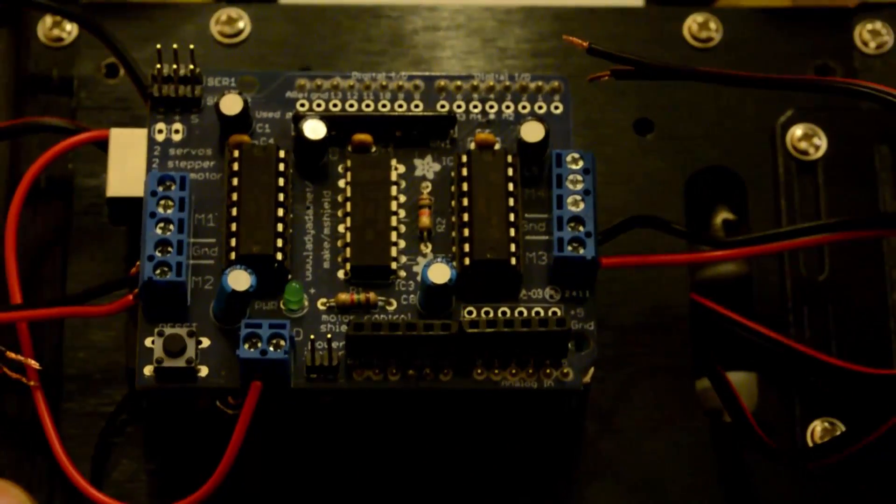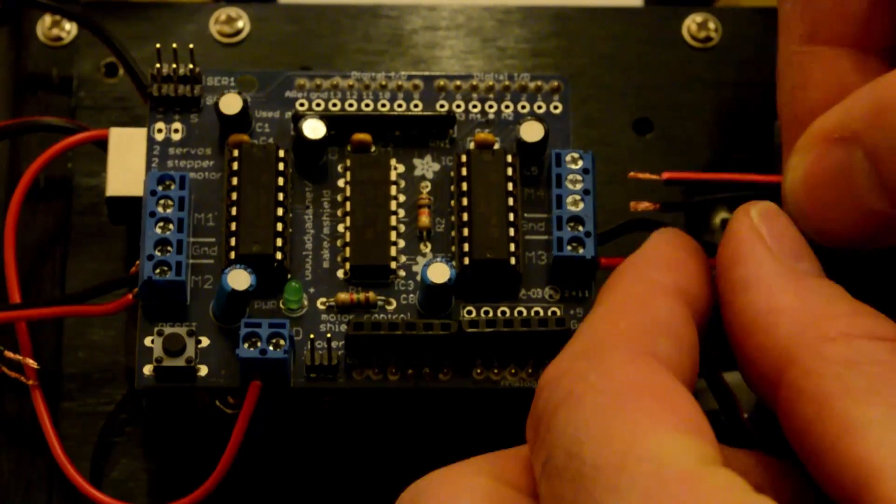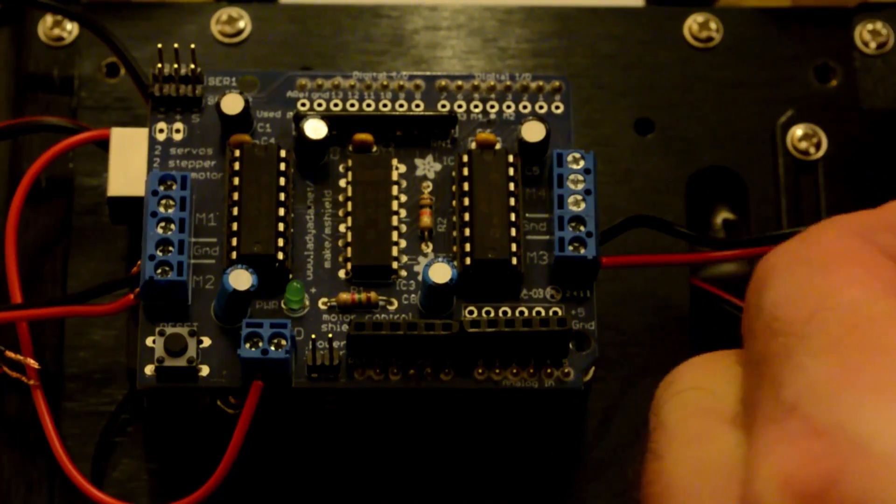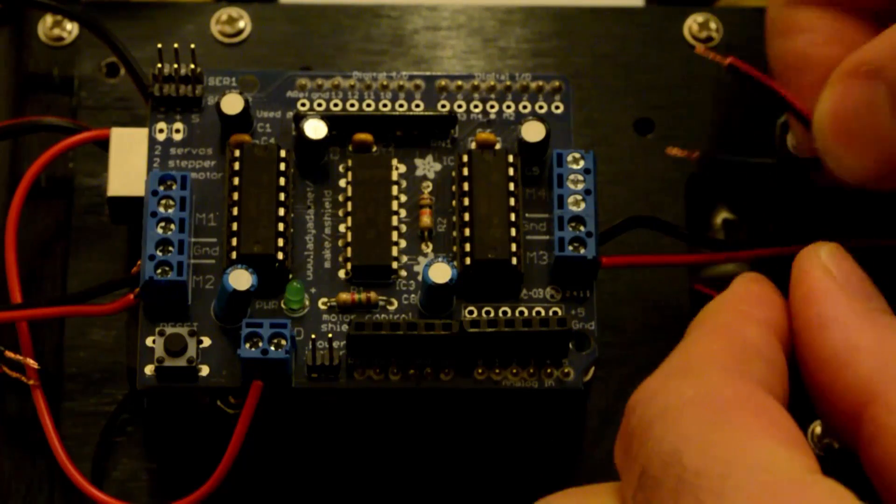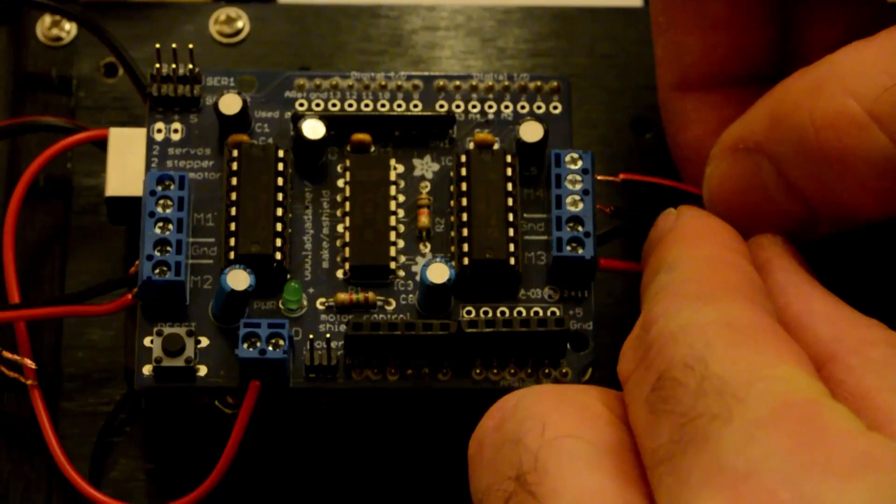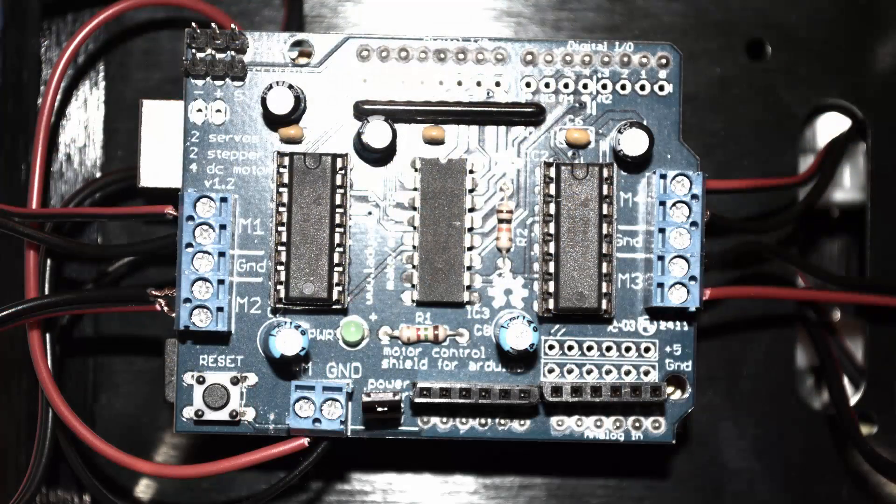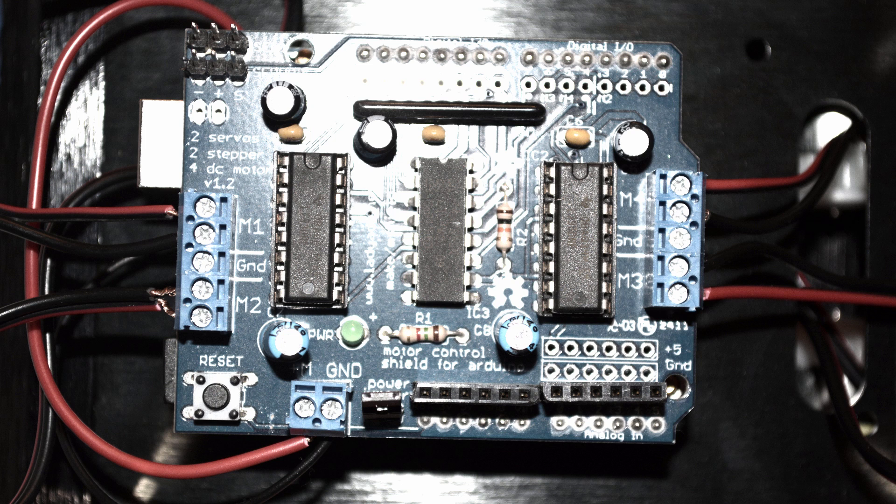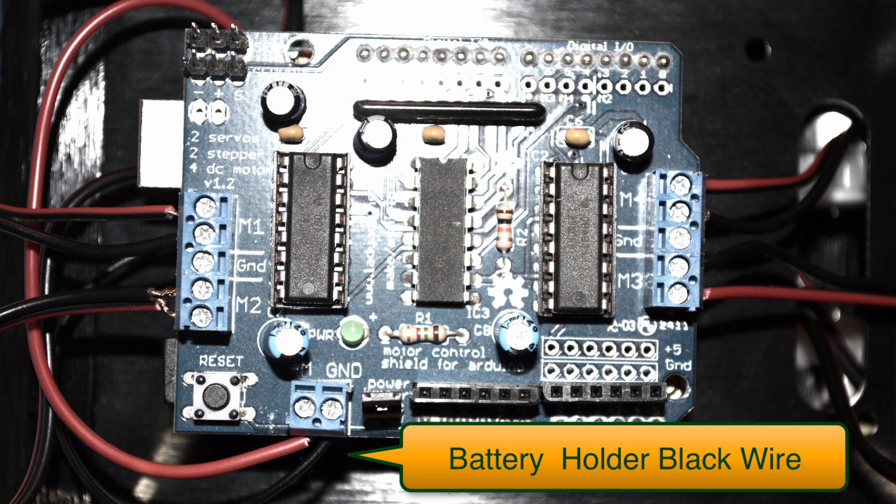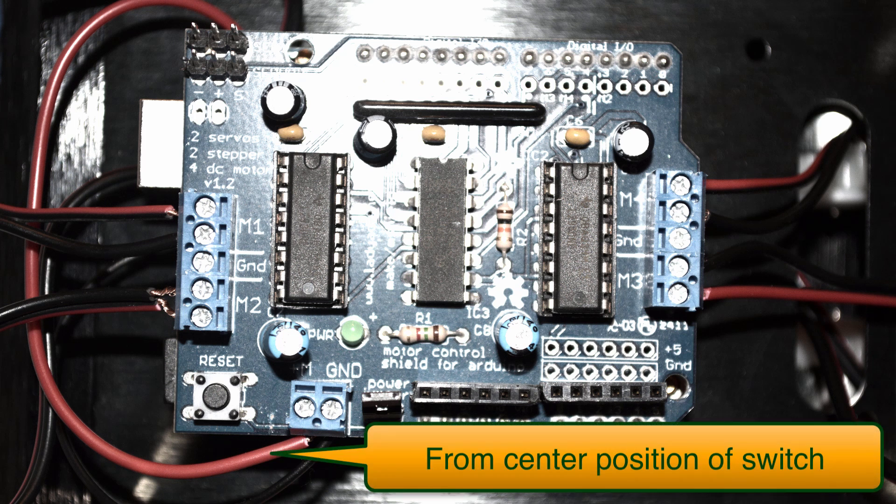Now depending on which motor controller boards you're using will determine where you actually screw in your power and ground wires and also how you get the motors plugged in. So you need a pretty small screwdriver to raise and lower the wire holders on most of the controller boards. Since the Adafruit motor shield is so common, I'll go ahead and run through how to hook it up. First you want to make sure that the battery power is switched off and you're going to take the black wire from the battery holder and that's going to go into the ground terminal on the motor controller board. Then take the red wire from the switch and that's going to go into the positive power terminal.